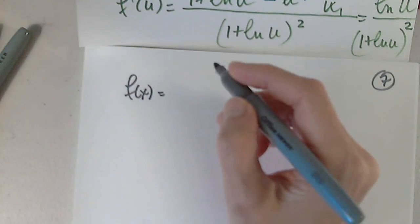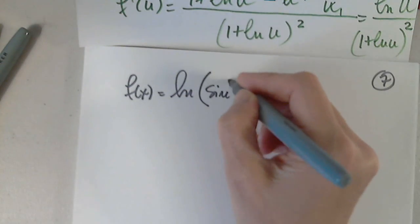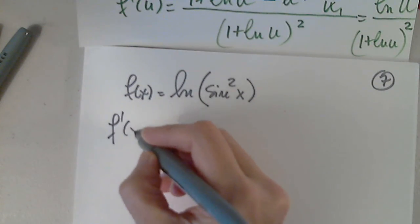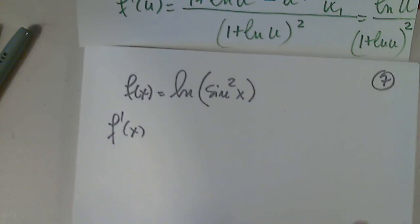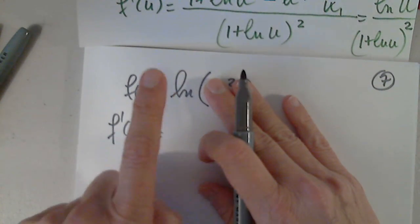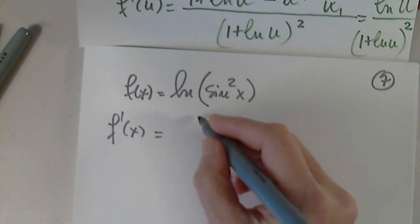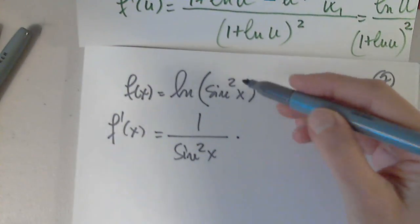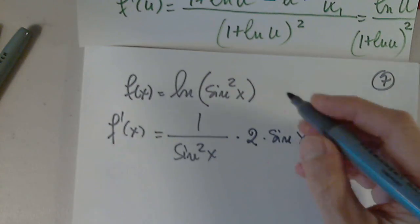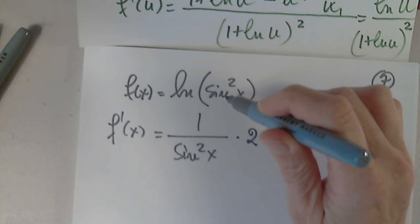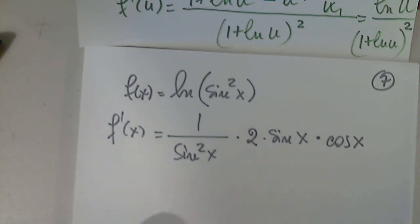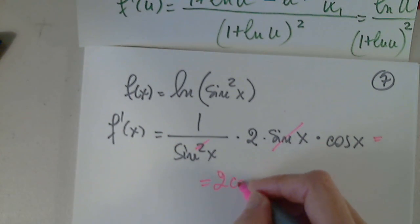Let's look at a function composition: the natural log applied to sin²(x). The function is given; we differentiate directly. This is a function inside a function with no addition or subtraction. I start by differentiating the outer function: 1 over sin²(x). Then I multiply by the inner function's derivative: bring down the power 2, subtract 1, giving 2 sin(x), then differentiate sin to get cosine. Simplifying a sin(x) gives 2 cos(x)/sin(x), which is 2 cot(x).